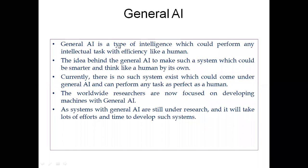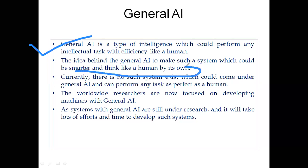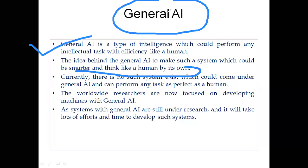General AI is a type of intelligence which could perform any intellectual task with efficiency like a human. The idea behind General AI is to make a system that is smarter and can think like a human by itself. However, currently there is no such system that qualifies as General AI and can perform any task as perfectly as a human does.